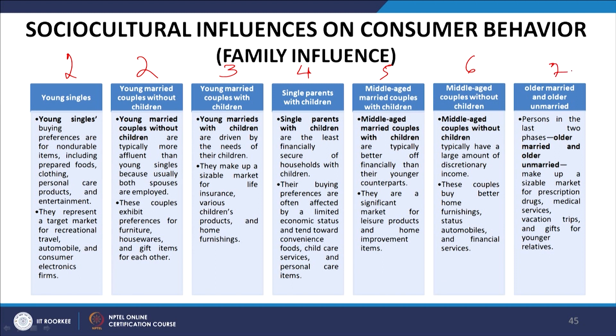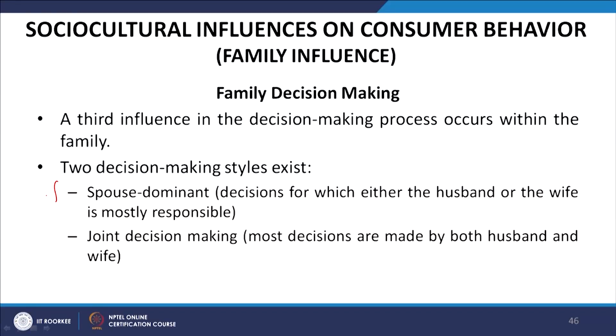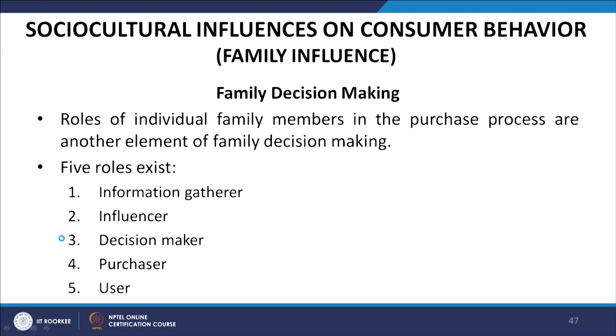Older married and older unmarried people make up a sizable market for prescription drugs, medical services, vacation trips, and gifts for younger relatives. Family decision making includes spouse-dominated decisions and joint decision making. Family members can play five roles in the purchase process: information gatherer, influencer, decision maker, purchaser, and user.